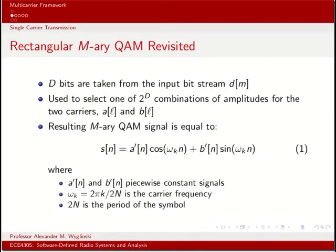Let's first start off with revisiting rectangular M-ary QAM, which we saw several lectures ago. D bits are taken from an input stream, a bit stream d[m]. We use to select one of 2^D combinations of amplitudes for two carriers, A and B.